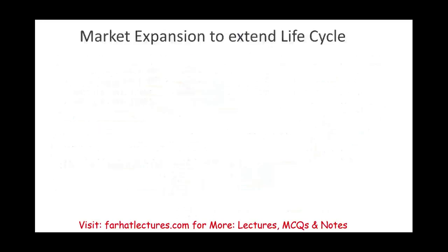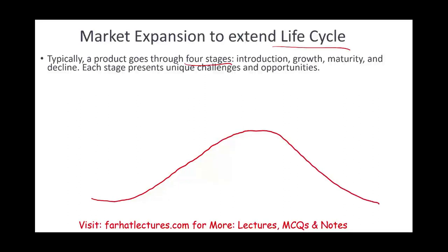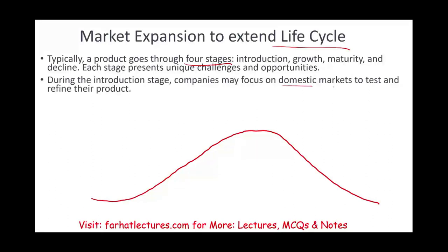Another reason companies operate overseas is to extend their product life cycle. Any product goes through four stages: introduction, growth, maturity, and decline. Each stage presents unique challenges and opportunities, and the key for any company is to extend the growth phase as long as possible. During introduction, companies may focus on the domestic market first to test the product and fix any issues.